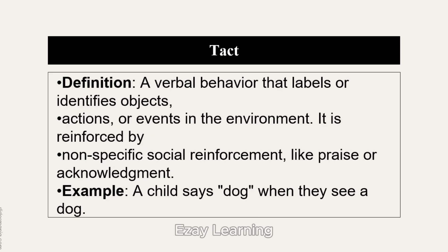Tact is basically labeling or identifying something. When a child sees a picture of a dog, they say 'dog,' or they might try to imitate the sound of a dog. Tact is reinforced by non-specific social reinforcement such as acknowledgement or praise. For example, if you show a child a picture of a glass and they say 'glass,' you acknowledge and praise them — that behavior is reinforced.